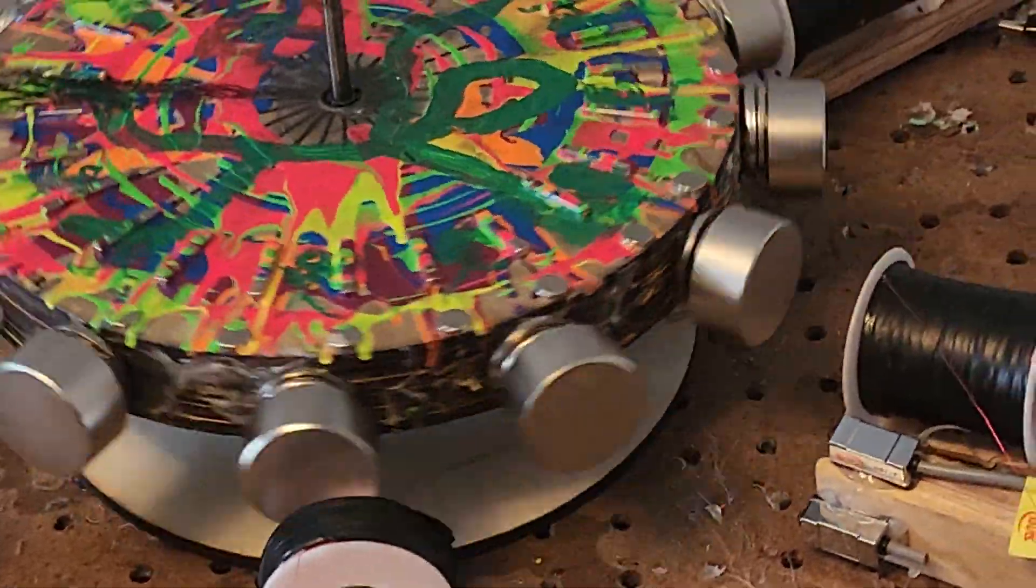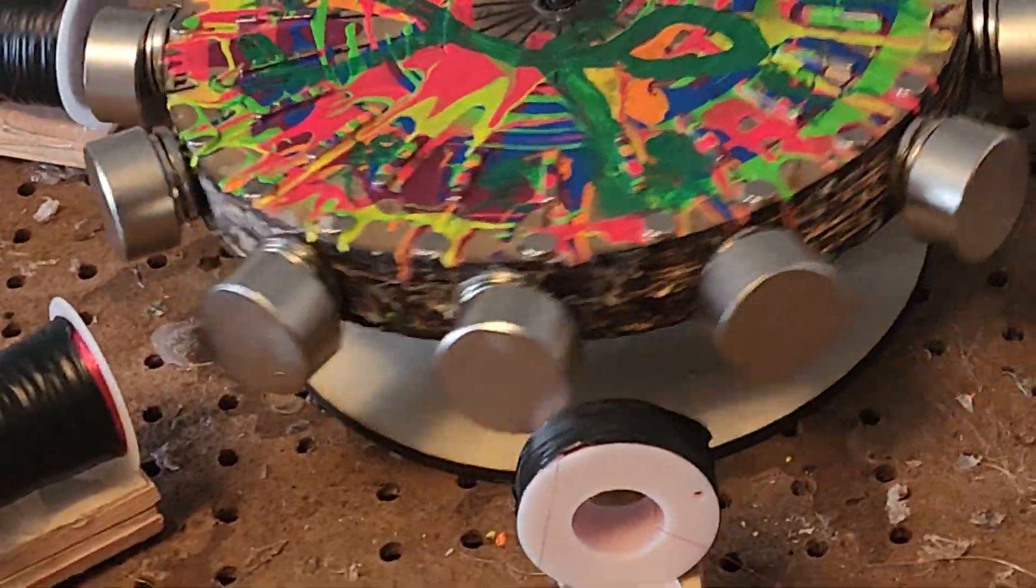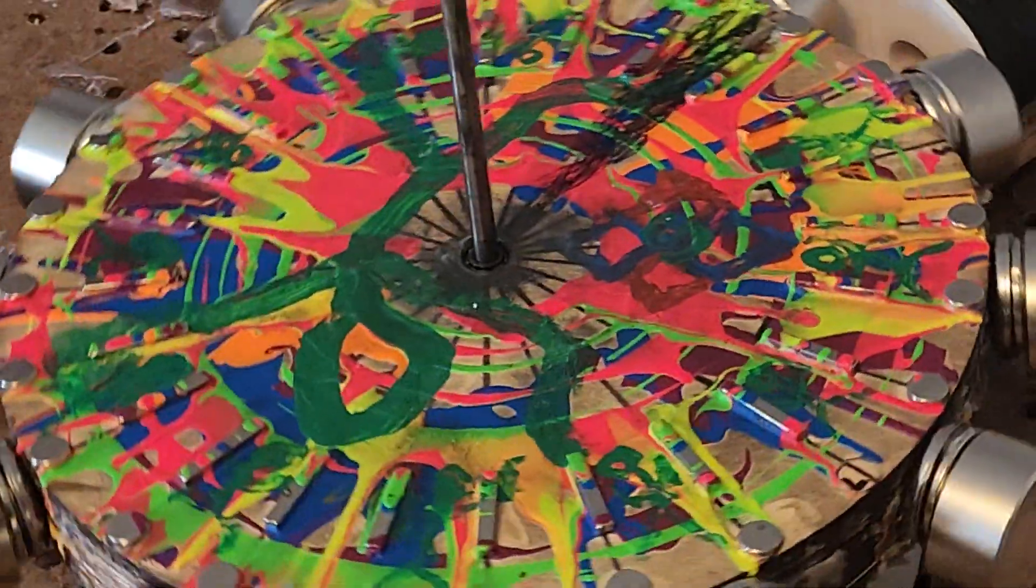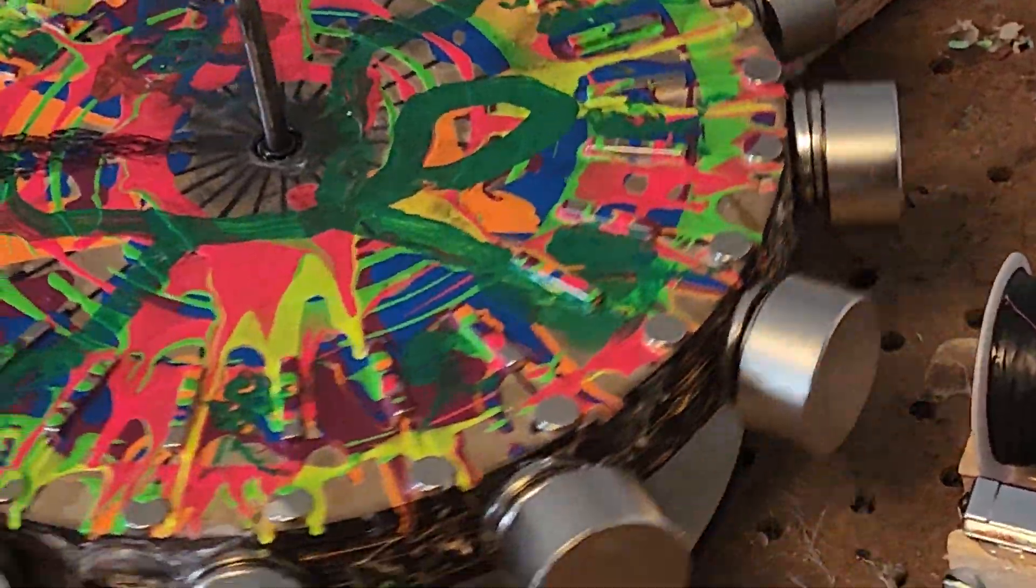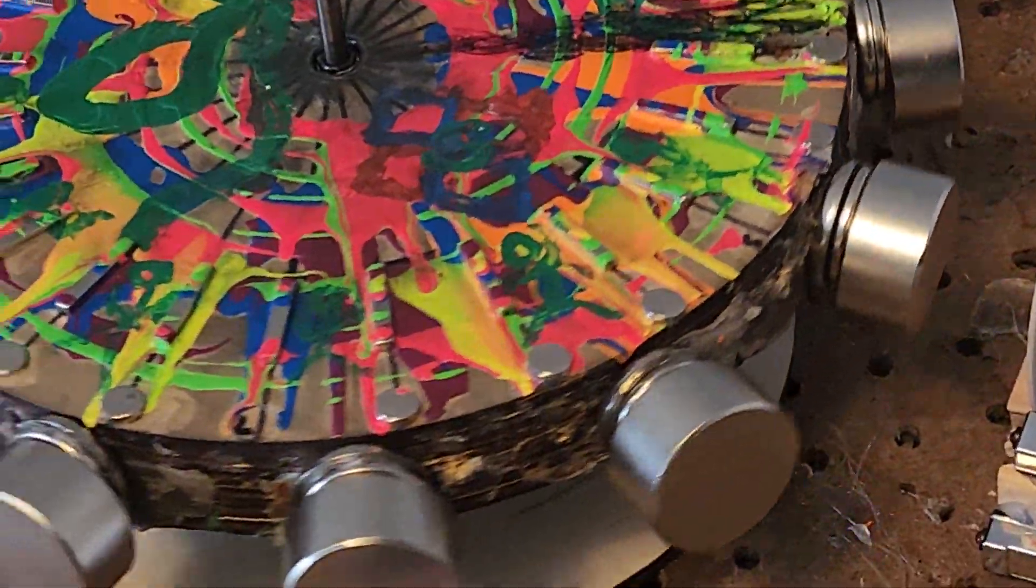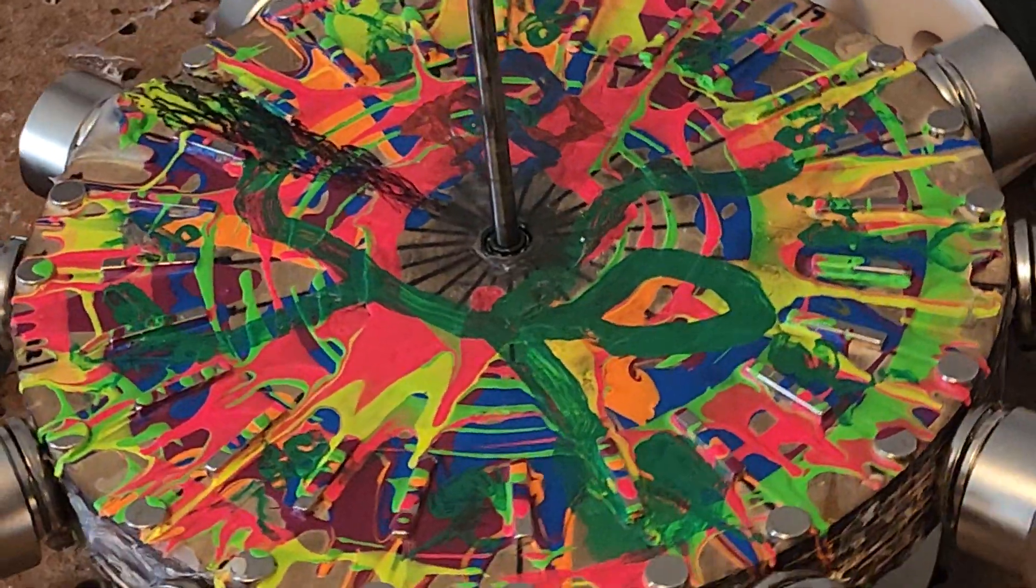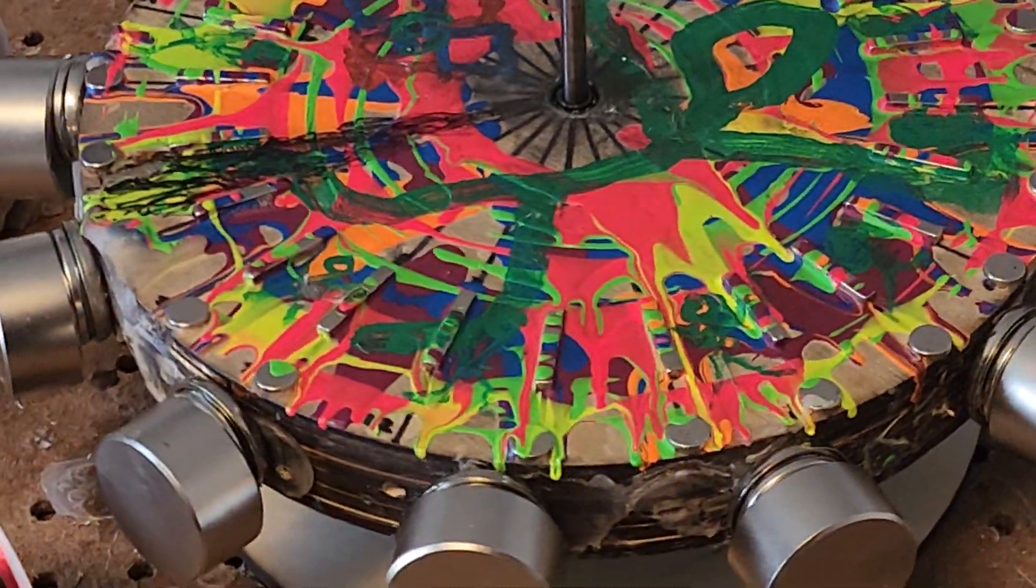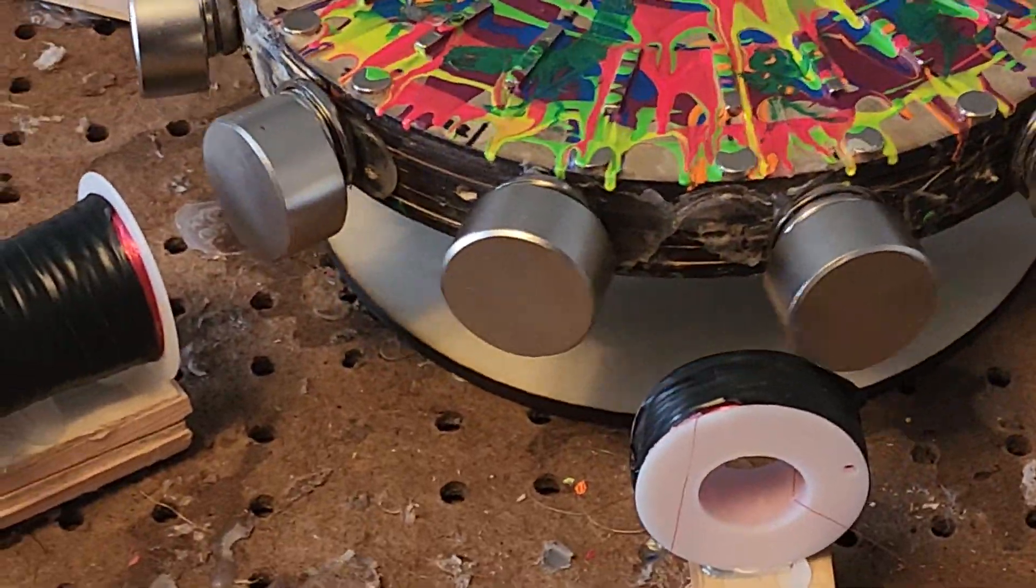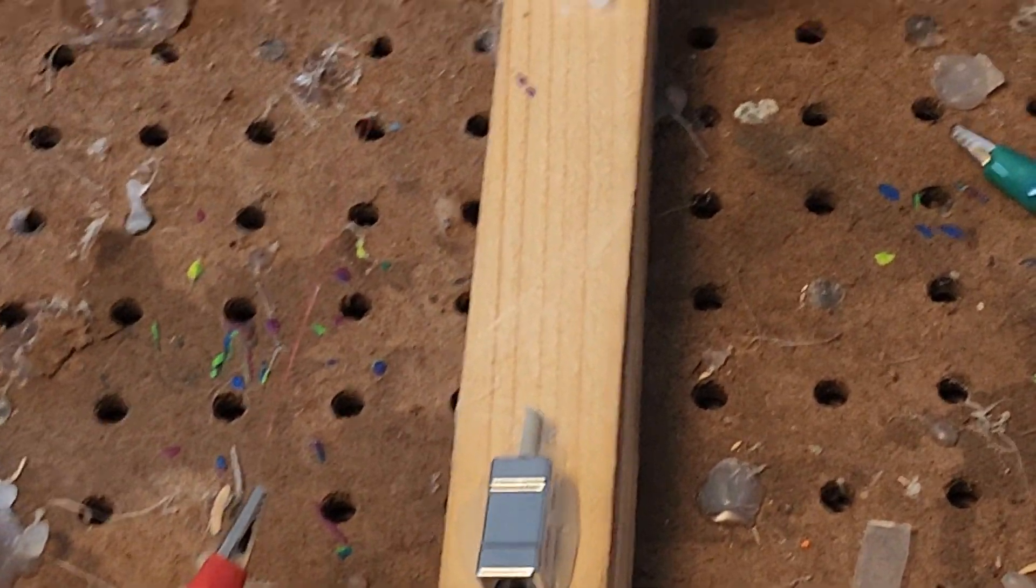And right now that shaft is just kind of chilling there, it's not bolted down or anything. Probably want to do that. Find out where I want it for real and then bolt it down. It's pretty close where it is now, but only bolt it down from the bottom. See, and then the top can be flat on the top, it won't have that little nipple.